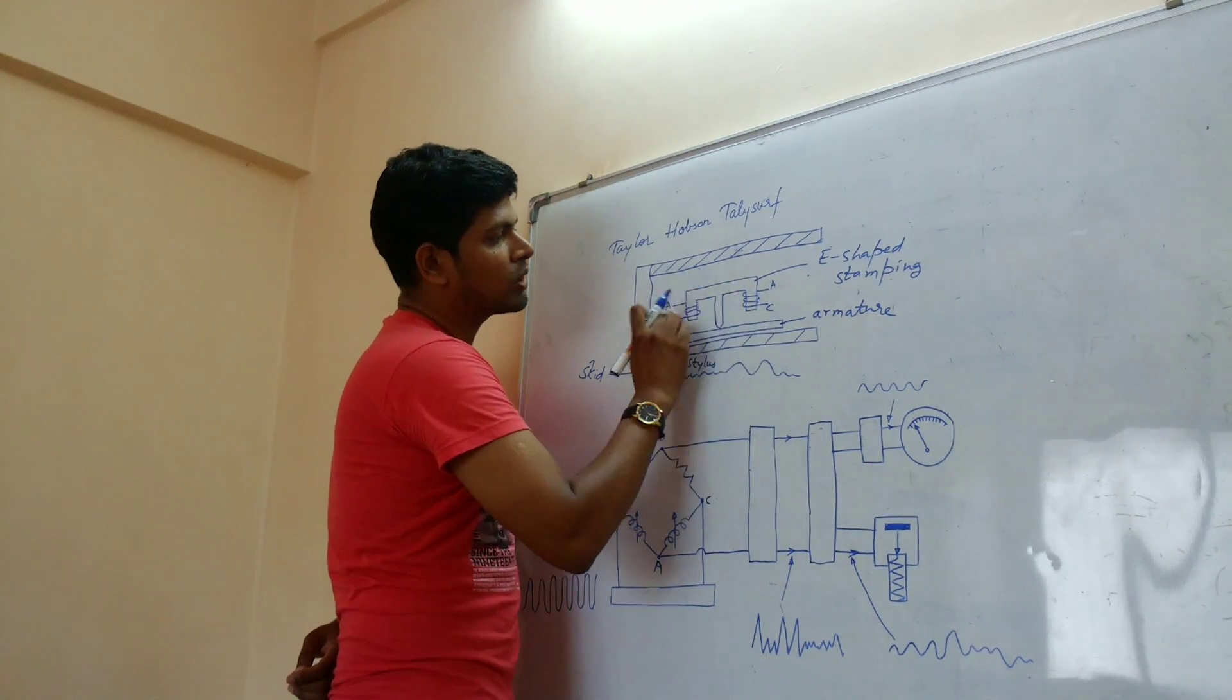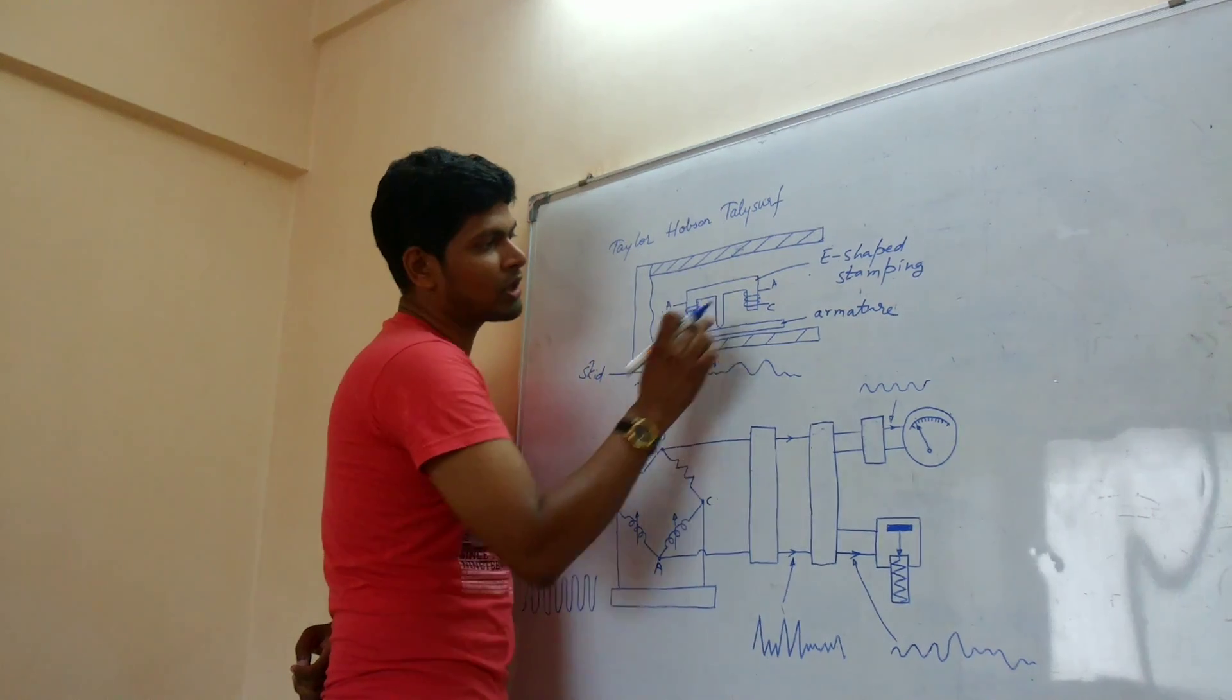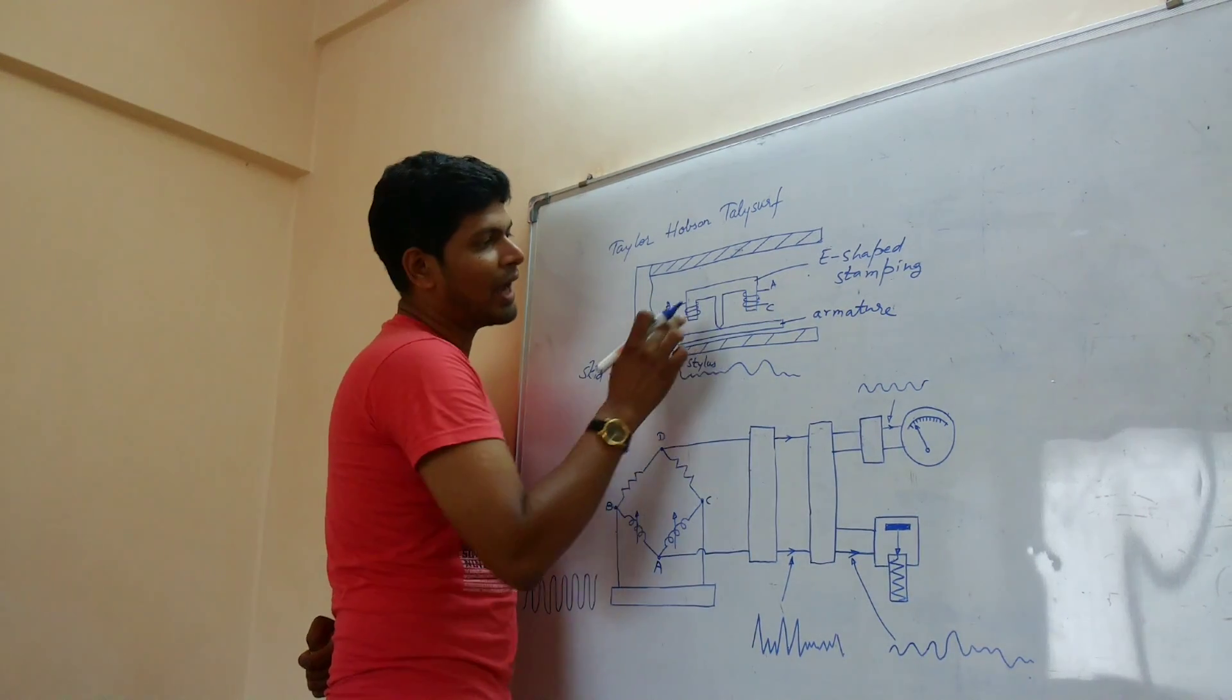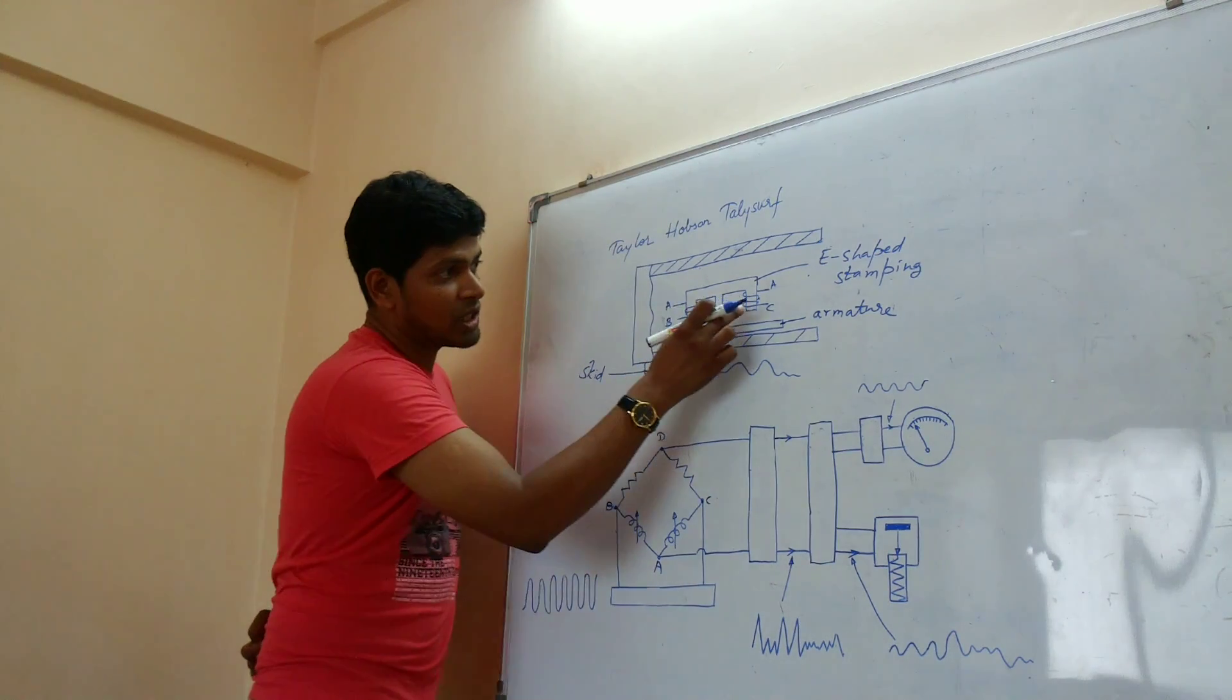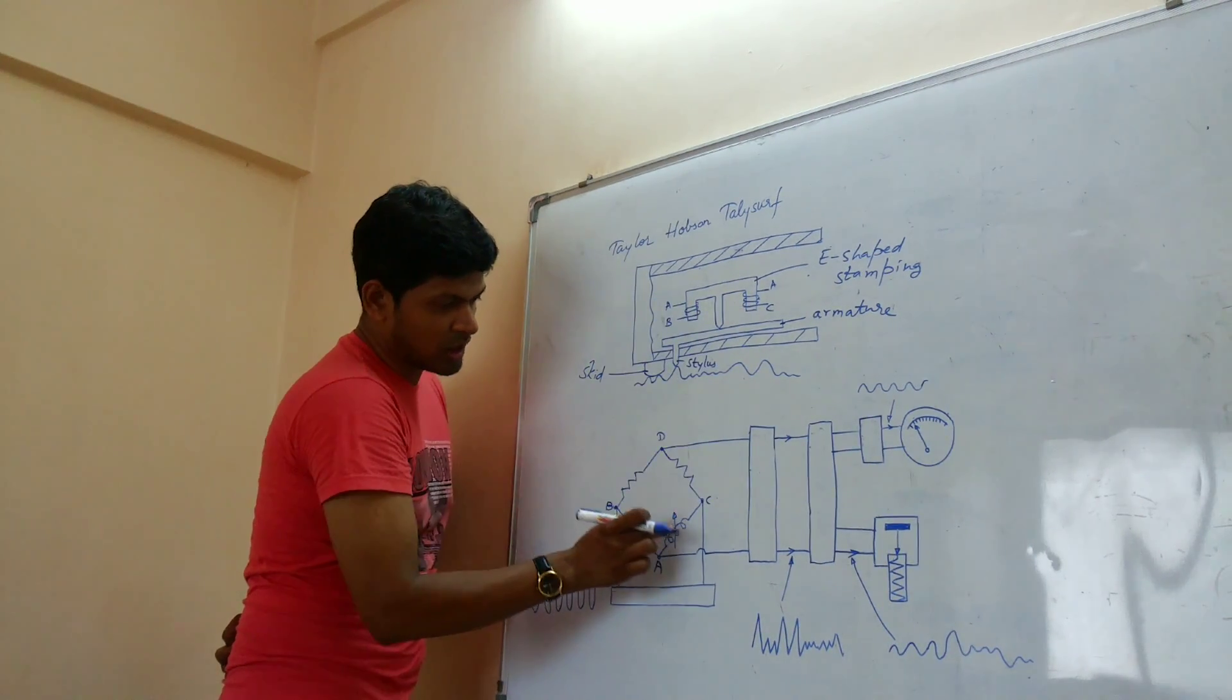And on the two legs of the stamping you can see the coils and AC current is flowing through them. And these coils, these are the coils.